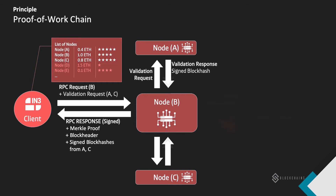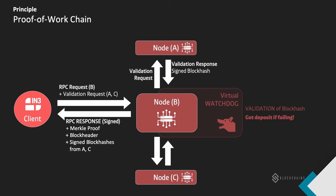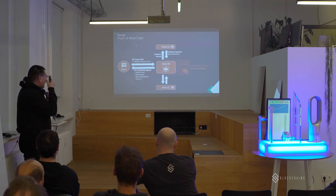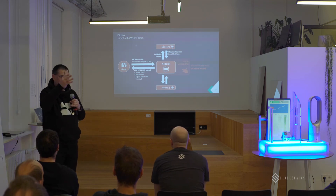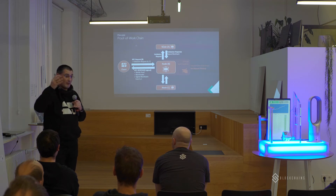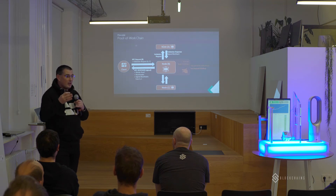What happens if they give false information? All the nodes can check if the signed block hash is correct. If the block hash is not correct, then they can go to the smart contract — the registry contract — and convict the node which gave the false information. This means the node loses its deposit and is thrown out of the network. So the client knows: I selected three nodes, they have this deposit, and if they give me false information, they will lose that deposit. This gives a crypto-economic incentive for the nodes to provide honest answers.